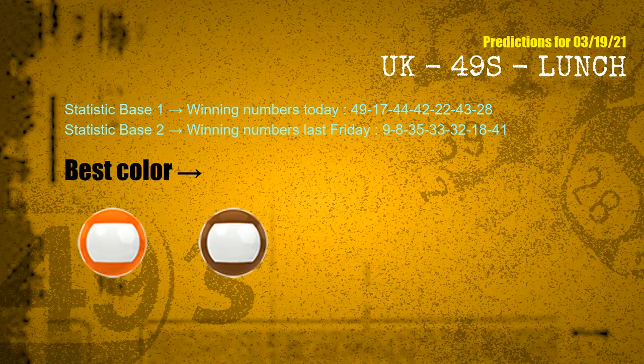According to the statistics above, with winning numbers today 49, 17, 44, 42, 22, 43, 28, and winning numbers last Friday 09, 08, 35, 33, 32, 18, 41 — the frequent following colors are orange and brown. Now we have some following ones and ball colors, here are some tips for you to increase hit odds.